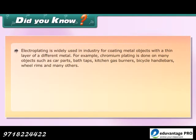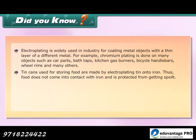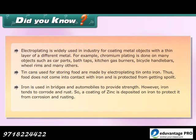Did you know? Electroplating is widely used in industry for coating metal objects with a thin layer of a different metal. Chromium plating is done on many objects such as car parts, bath taps, kitchen gas burners, bicycle handlebars, and wheel rims. Tin cans used for storing food are made by electroplating tin onto iron, so food does not come into contact with iron and is protected from spoiling. Iron is used in bridges and automobiles for strength; however, iron tends to corrode and rust, so a coating of zinc is deposited on iron to protect it from corrosion and rusting.